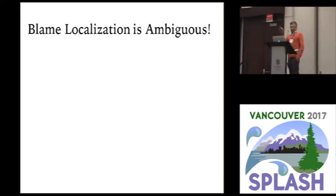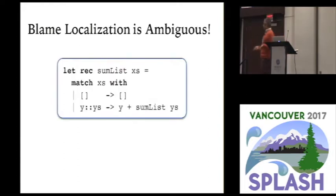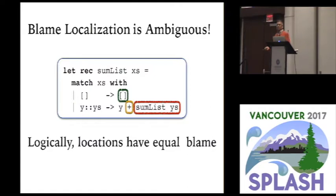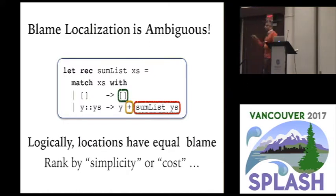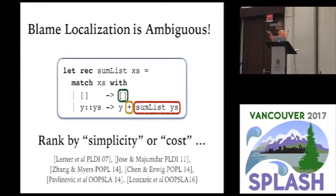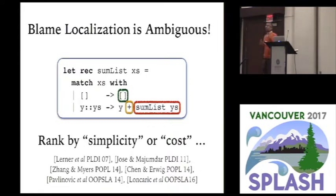Here's the catch: trying to pinpoint exactly where the error is is kind of a fuzzy question. Returning to this particular example, each of those three locations is a plausible error location. Maybe I meant to put a cons operator instead of a plus; maybe I shouldn't have called sum_list and just wanted to return something else. The real error — which you and I know — is we should have replaced the empty list with zero. You can imagine various heuristics that look at what the type system does and assign costs, like an Occam's razor simplest possible explanation.